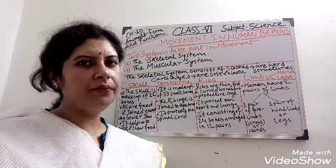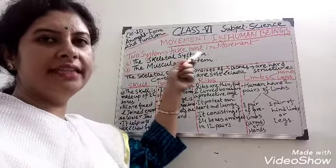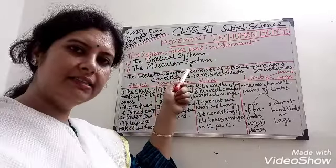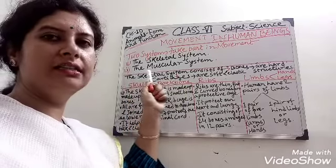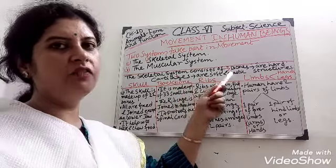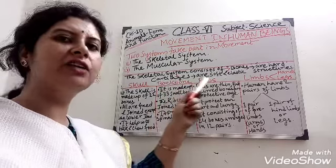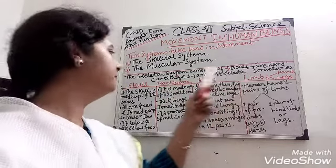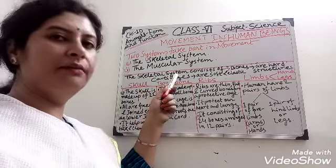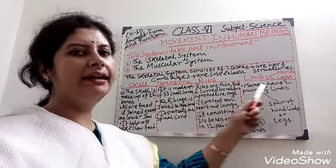Our next topic is movement in human beings. Two systems take part in this movement: the skeletal system and the muscular system. The skeletal system consists of bones, which are hard in structure, and cartilage, which are soft and elastic. The skeletal system also consists of the skull, backbone, ribs, and limbs.